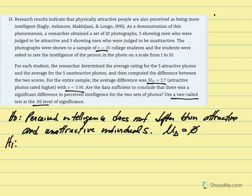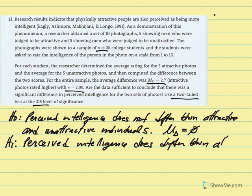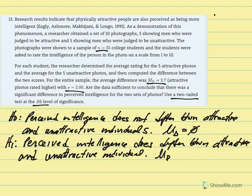And the alternative or research hypothesis would say that it does differ. So, perceived intelligence does differ between attractive and unattractive individuals. And our notation would be that the mu difference is not equal to zero.